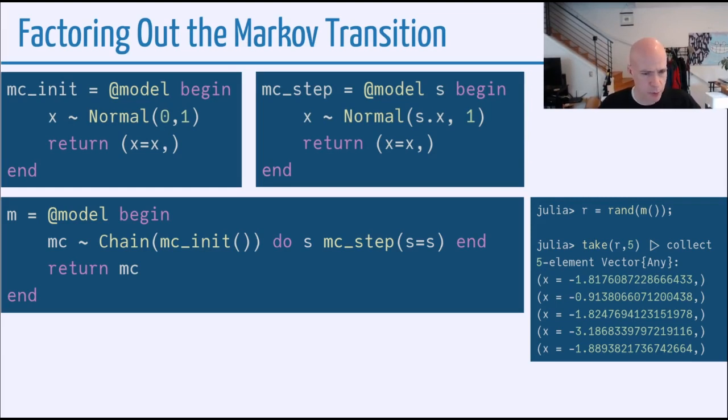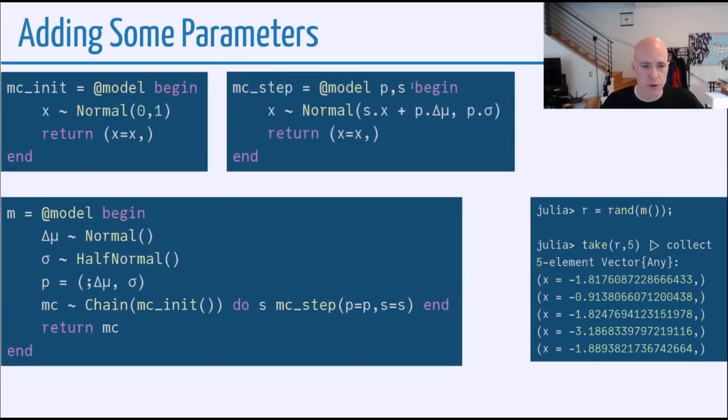So let's add some parameters. We can add a drift term that's added to the value each time we take the normal for the transition kernel, and also a standard deviation. And everything else will stay the same in the transition kernel step. In the model itself, we also need to add priors for these parameters. And then for the mc_step, we will now pass in the parameters as well as the state.